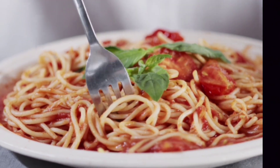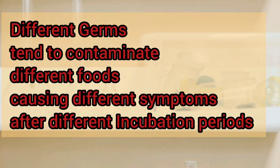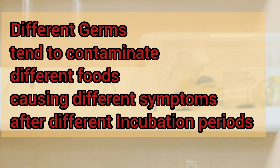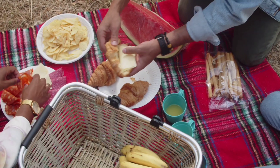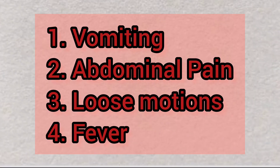It is important to mention that different germs causing food poisoning produce slightly different symptoms after different incubation periods. The incubation period is the time between when you get contaminated and when you start to present symptoms. The most common symptoms of food poisoning are vomiting, diarrhea, abdominal pain, and sometimes fever.